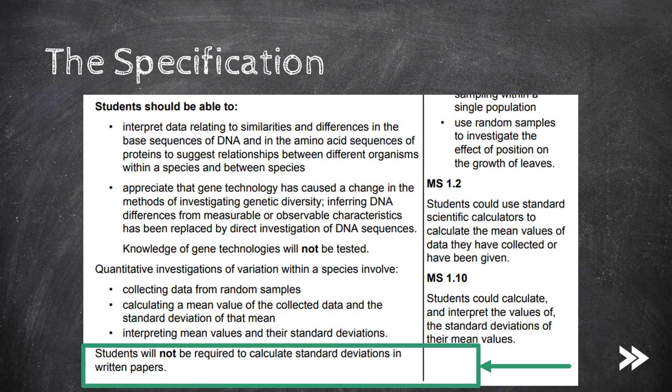A typical question might be: how would you obtain data in order to investigate variation within a species? You would mention how you would collect the data, calculate the mean, and then calculate a standard deviation, but you wouldn't have to actually calculate any values. I will cover standard deviations in more detail in a later video, as well as things such as the t-test, the chi-square test, and correlation tests.